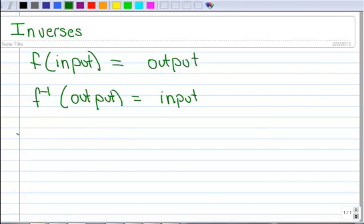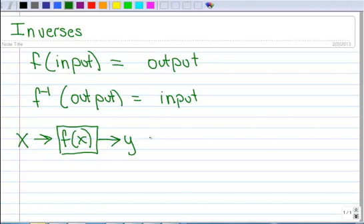I'm just going to write it slightly different. So x typically is our input, so if x goes into some function, we'll call it f of x, like to draw it in a little box, and then out comes some output, we'll call it y. If I then put y into the inverse function, and out comes the original input, which is x.